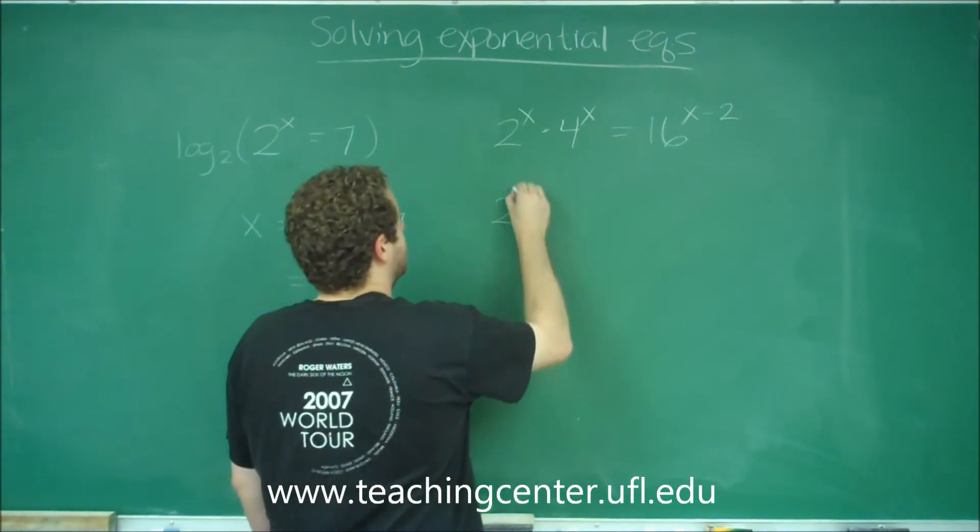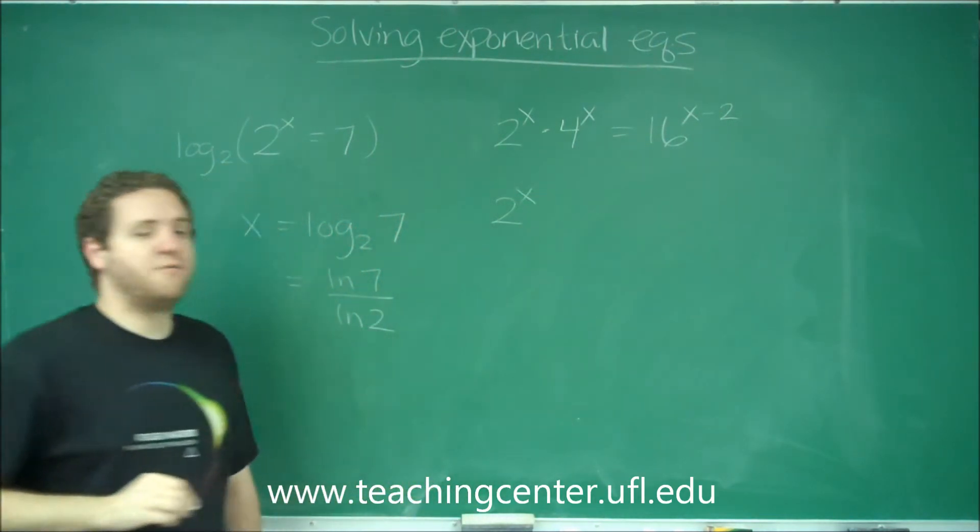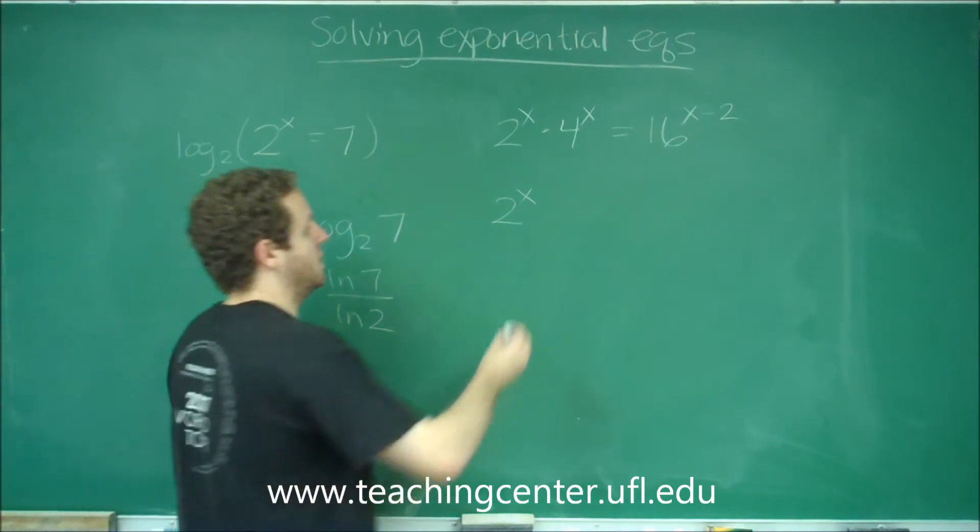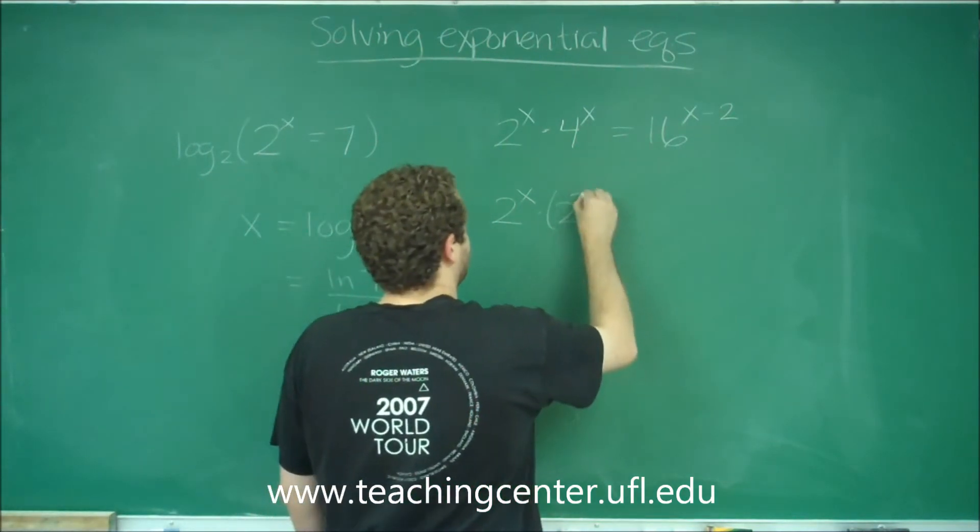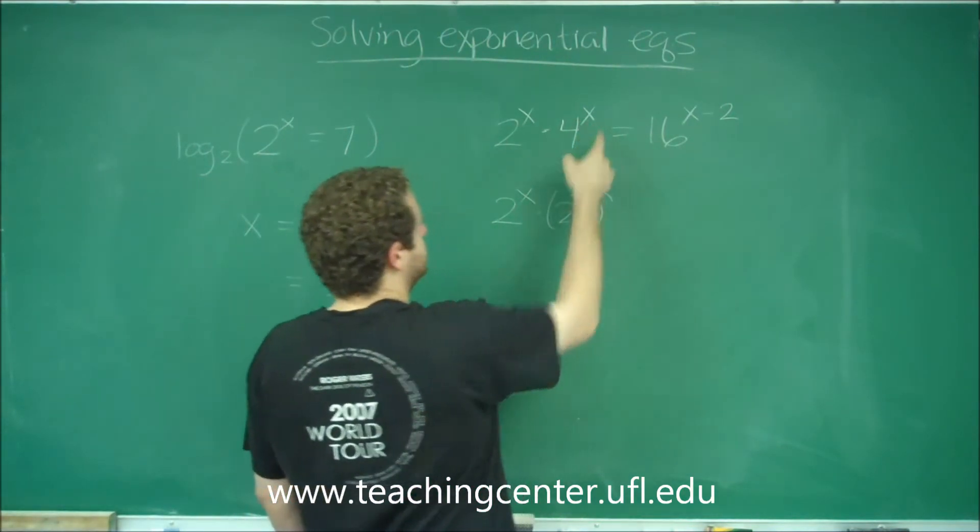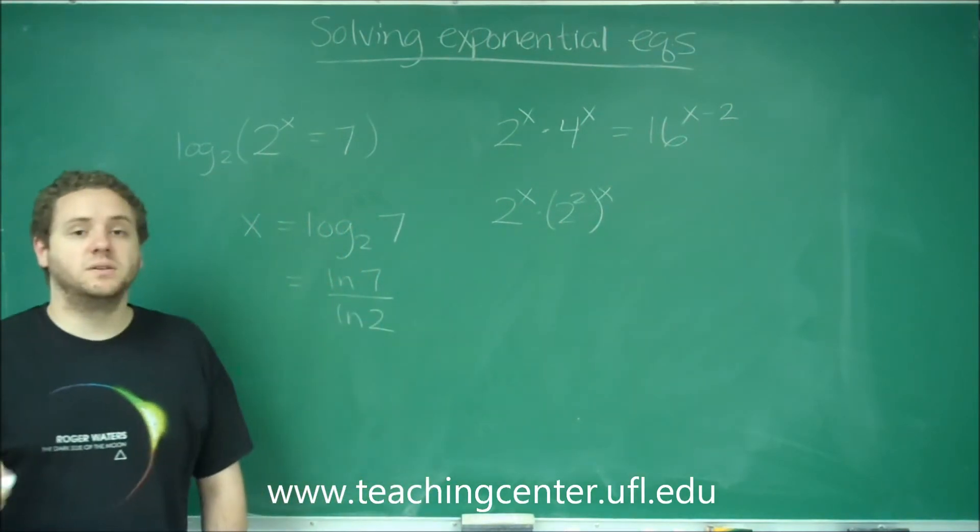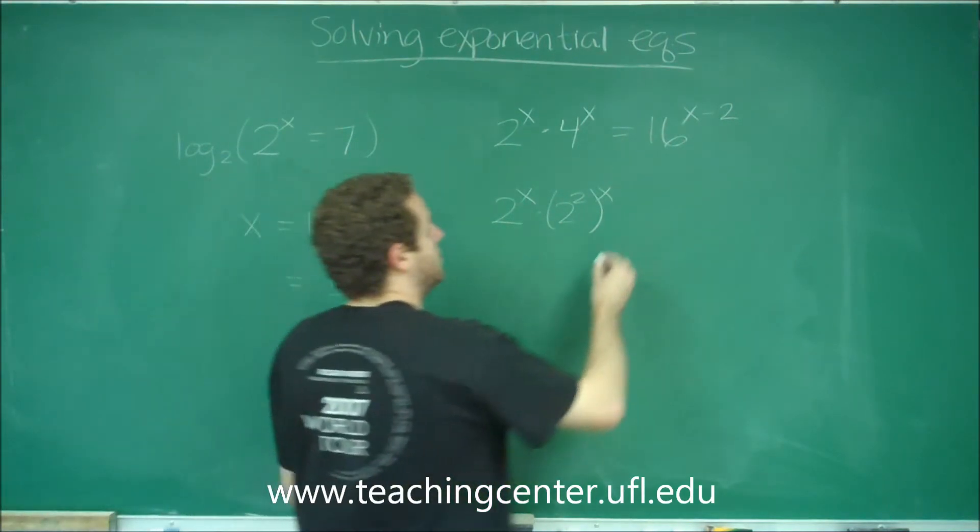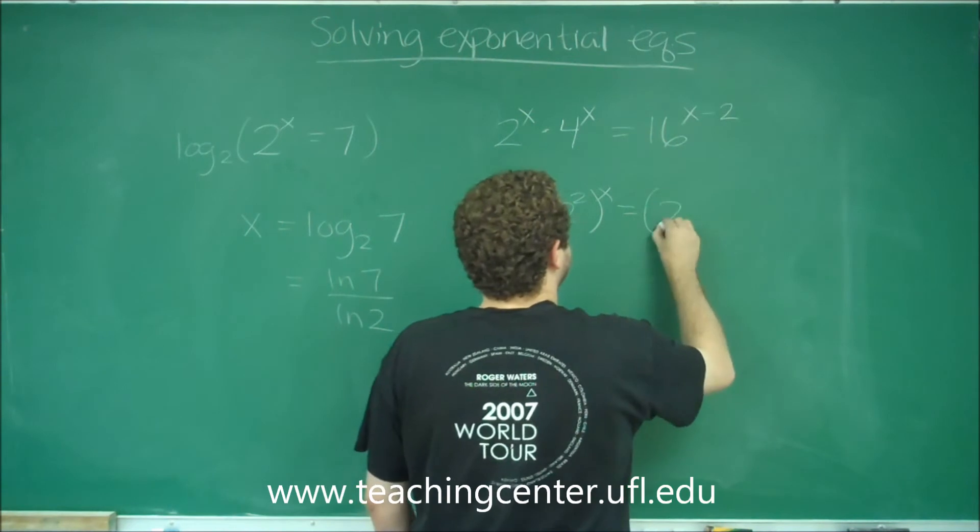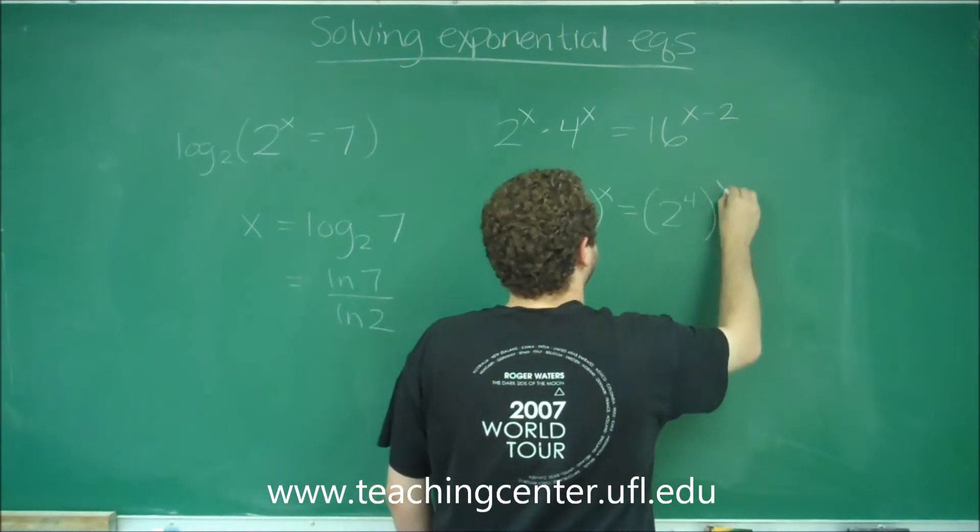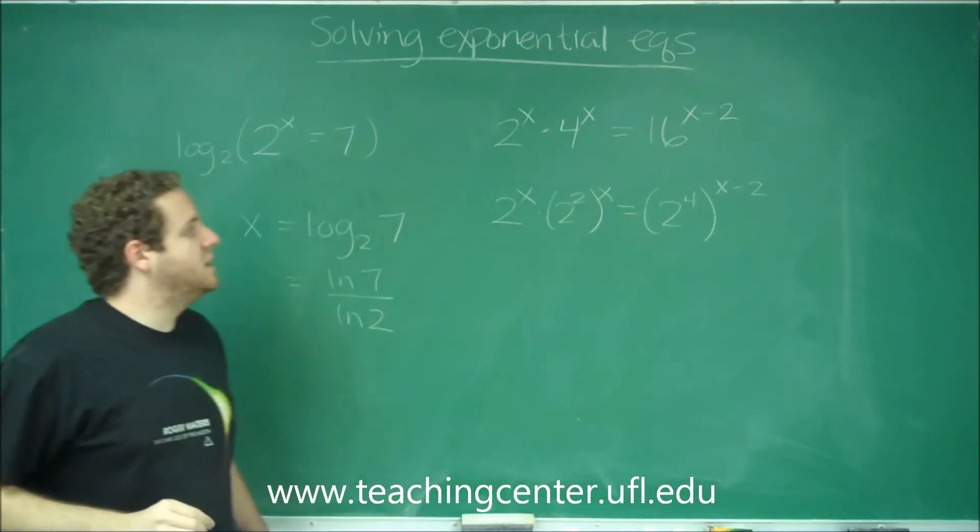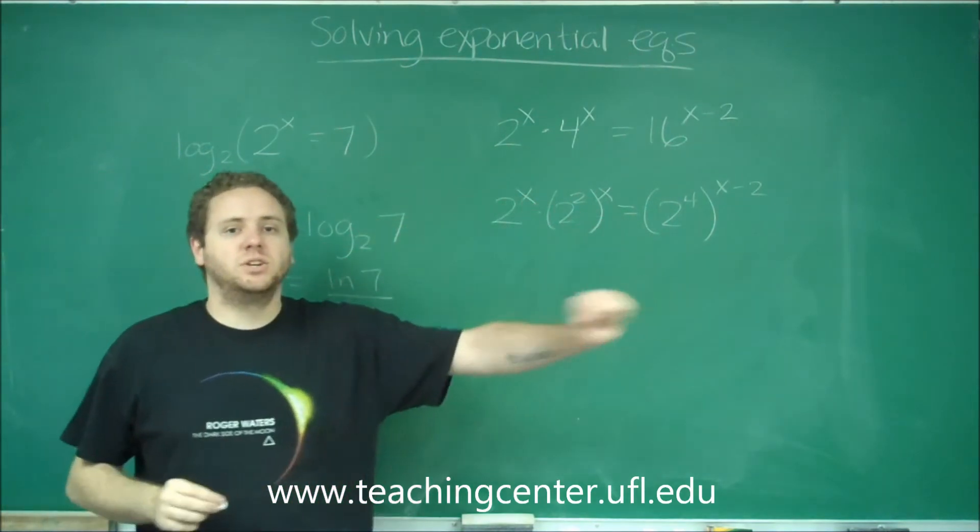So you want to convert everything to be the same base. So 2 cannot be converted to any other base. However, 4 is the same thing as 2 squared. So instead of 4 to the x, we could write 2 squared to the x. Similarly, with 16, 16 is 2 to the 4th.